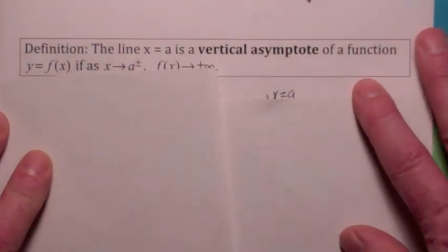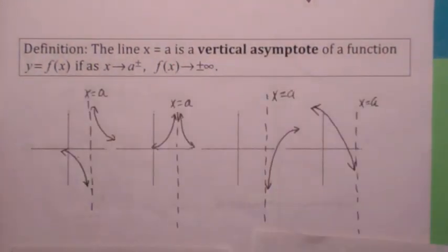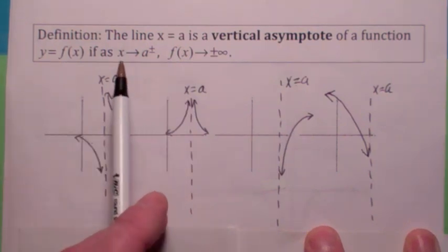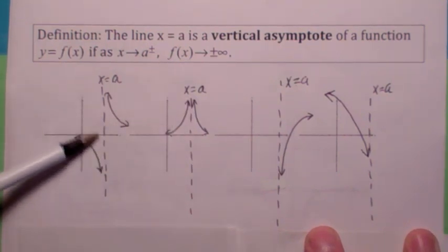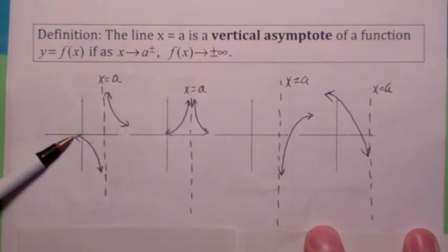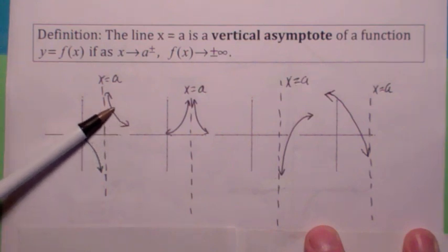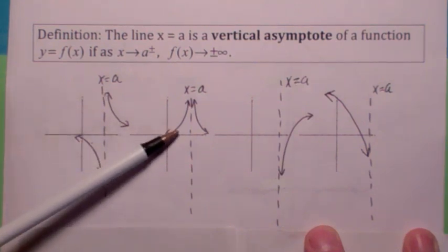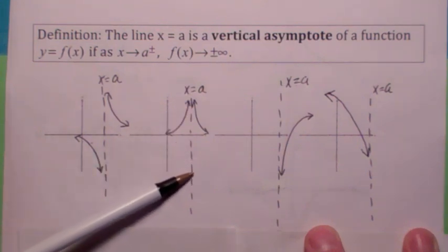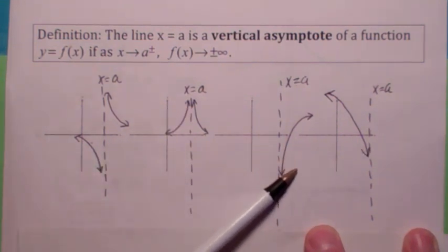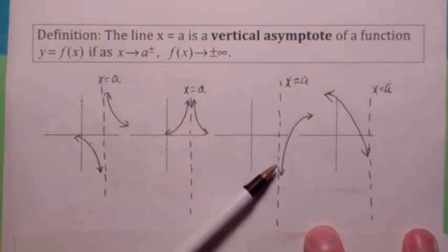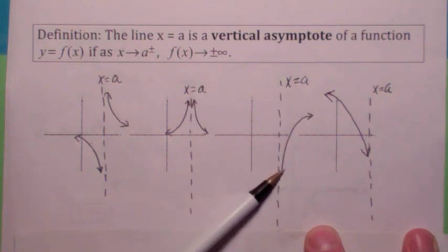Let's talk about vertical asymptotes. Vertical asymptotes are defined to be vertical lines — x equals something — where as x gets close to that number, x equals a, the function blows up. There are lots of possibilities: sometimes the function goes to positive infinity on one side and negative infinity on the other; other times it goes to positive infinity on both sides, or negative infinity on both sides. You don't have to have a vertical asymptote on both sides — like the logarithm function, which has a vertical asymptote on one side but not the other.